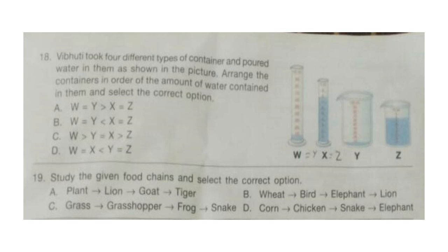Question 18: Vibhuti took 4 different types of containers and poured water in them as shown in the figure. Arrange the containers in order of the amount of water contained in them and select the correct option. The picture is not very clear so we cannot find the answer — sorry for that. We will move on to the next question.